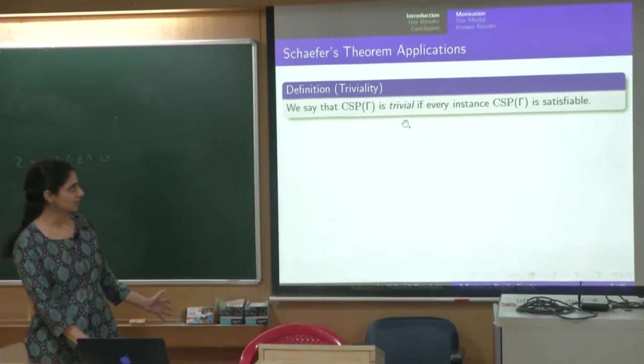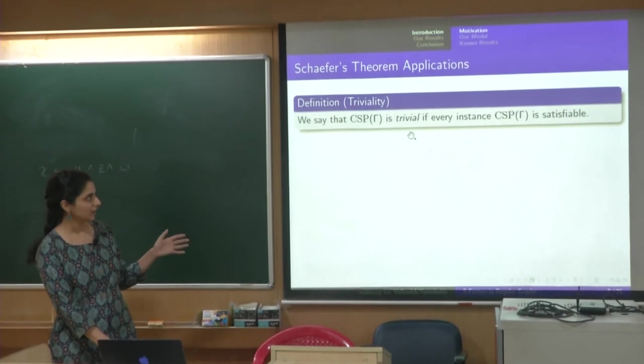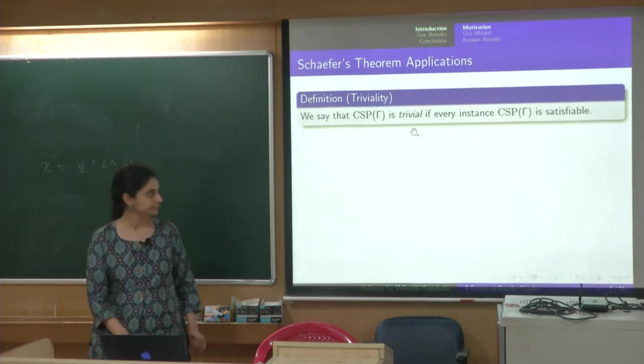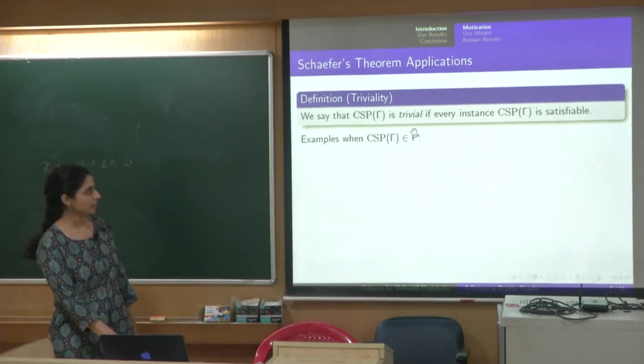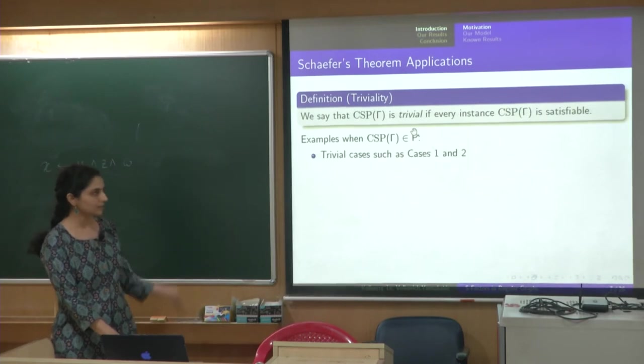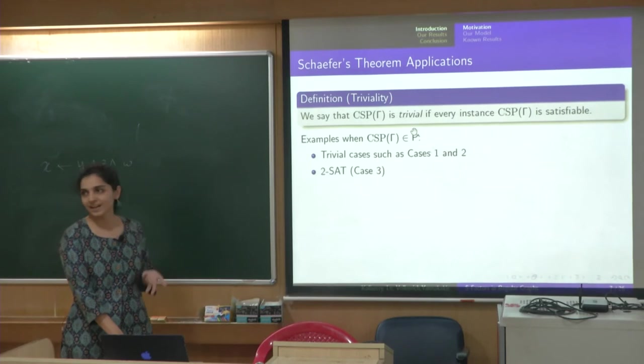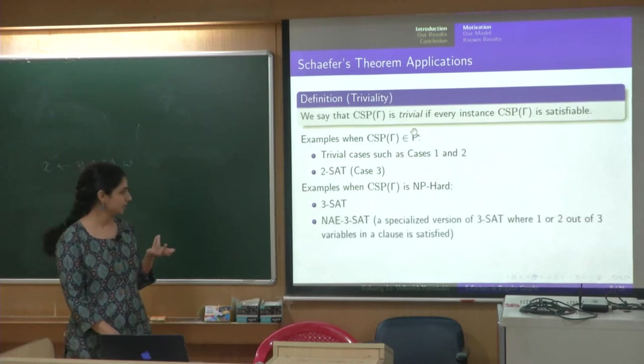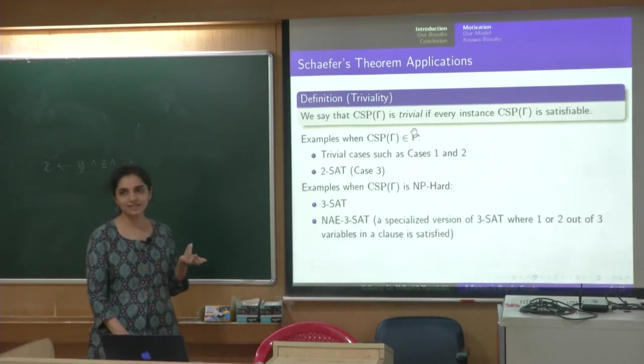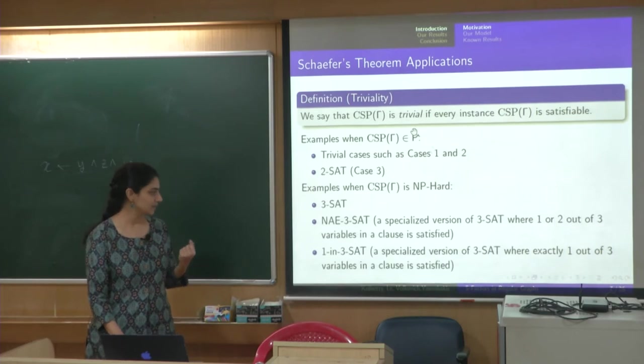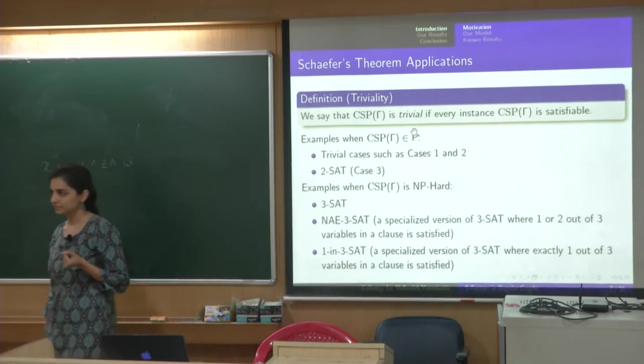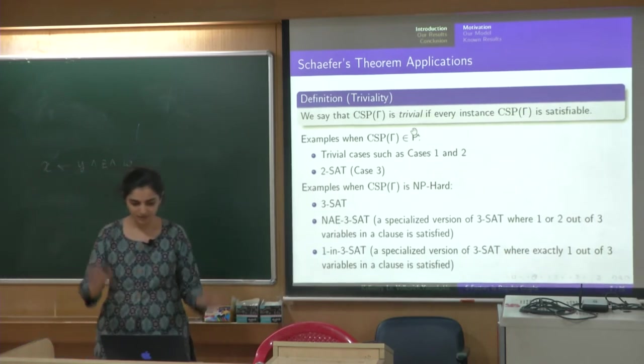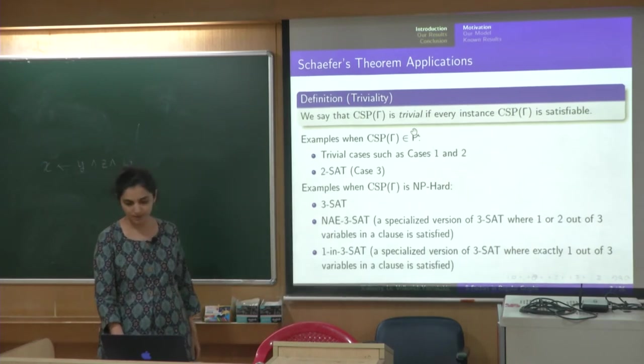So, this is a classical result and now many works have tried to generalize this result for some more notation. The CSP gamma is called trivial if every instance in CSP gamma is satisfiable. So, examples of CSP gamma in P are the trivial cases, 2sat which is basically the third case that I mentioned, NP-hard are 3sat, not all equal 3sat, 1 in 3sat, etc. So, you go to any gamma other than the one that I listed, it becomes NP-hard just for the sake of familiarity this slide has been introduced.